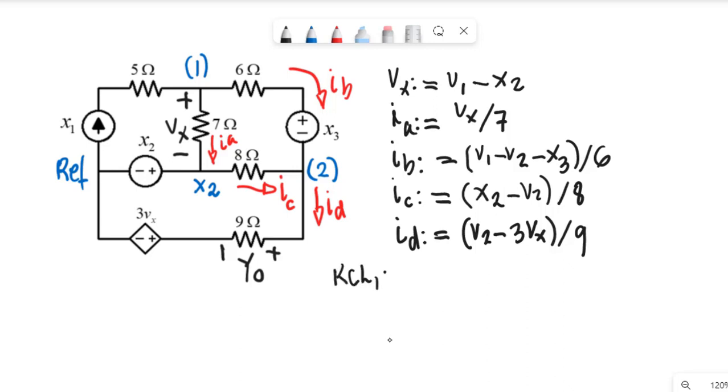KCL for node number 1 is simply currents going in. That is X1 goes in. Currents coming out, that is two: Ia and Ib. And the KCL for the second node, currents going in, Ia and Ic, and Id comes out.